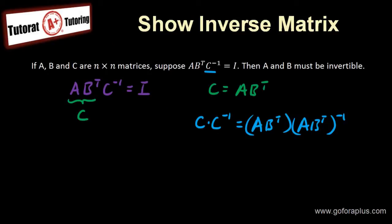Now this must be equal to I, and this must also be equal to I. But now we want to verify if A and B is invertible. So I have to look at this part here, (AB^T)^(-1).